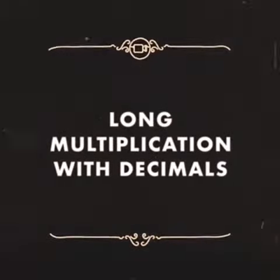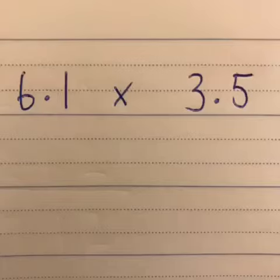Long multiplication with decimals. The problem we're going to look at is 6.1 times 3.5.